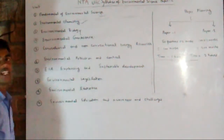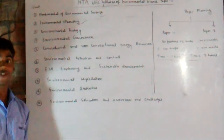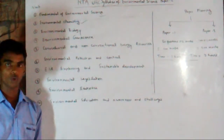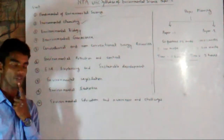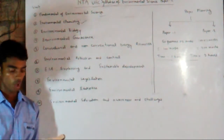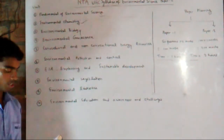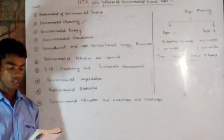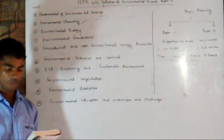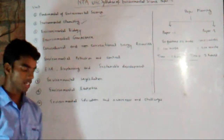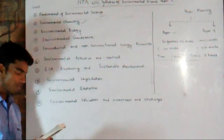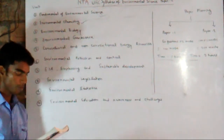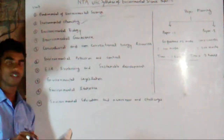Now we shall discuss the second unit: environmental chemistry. It is a very interesting unit and maximum questions are asked from this unit in the NET examination. This unit covers fundamentals of environmental chemistry, including stoichiometry, chemical energy, chemical potential, chemical equilibrium, acid-base reactions, solubility products, solubility of gases in water, the carbonate system, saturated and unsaturated hydrocarbons, and the chemical composition of air, water, and soil.